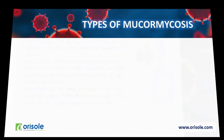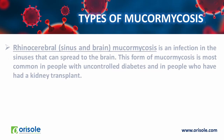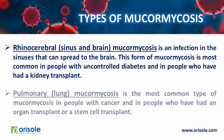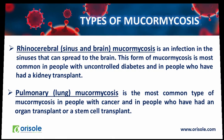Let us see the types of mucormycosis. Rhinocerebral mucormycosis is an infection in the sinus that spreads to the brain. This form is most common in people with uncontrolled diabetes and in people who have undergone kidney transplantation. Pulmonary or lung mucormycosis is the most common type of mucormycosis in people with cancer and in people who have had an organ transplantation or stem cell transplantation.